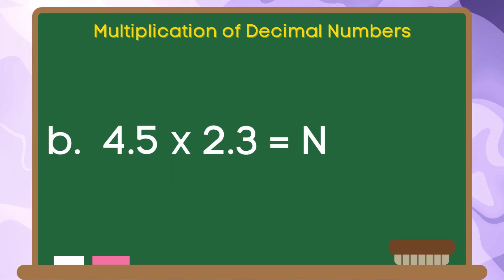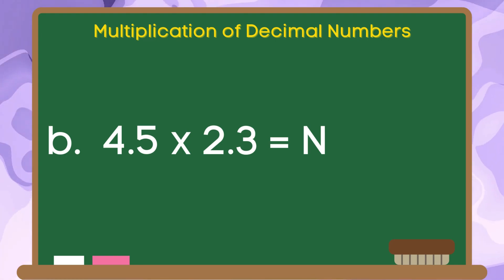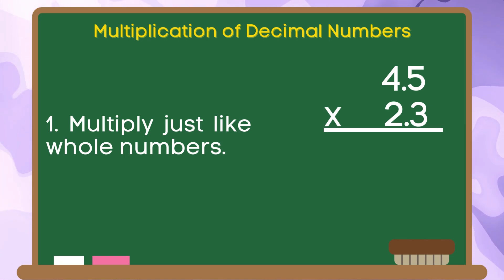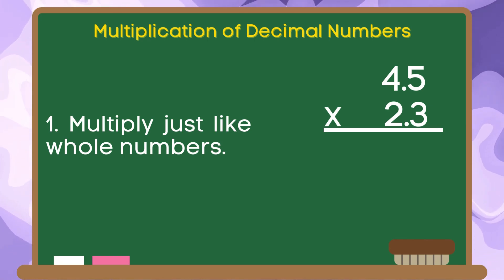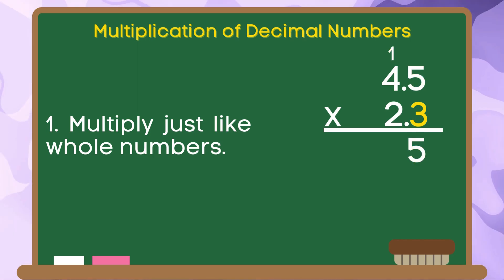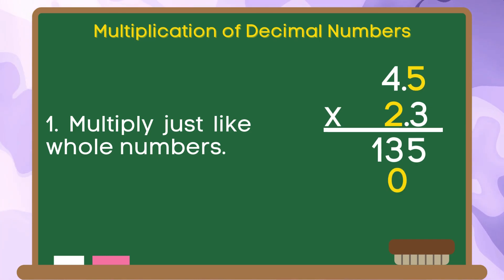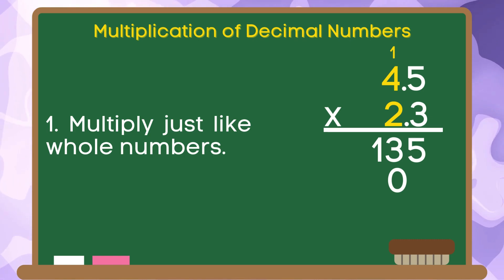Let us have another example. We are going to get the product of 4 and 5 tenths and 2 and 3 tenths. Let us again do step 1: multiply just like whole numbers. 3 times 5 is equal to 15. Bring down 5, carry 1. 3 times 4 is equal to 12, plus 1 is equal to 13. 2 times 5 is equal to 10. Bring down 0, carry 1. 2 times 4 is equal to 8, plus 1 is equal to 9.